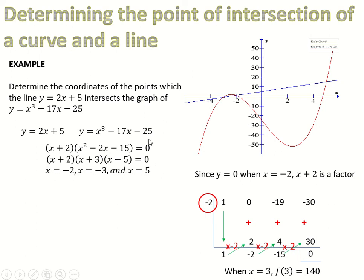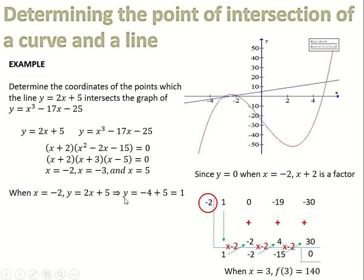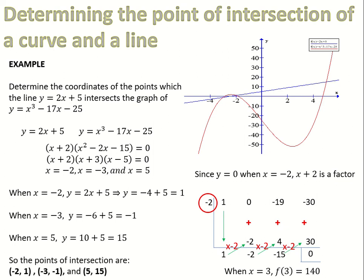These are just the x-values of where the lines meet, so we need to find the y-values. Since the points lie on both equations, use the simpler one: y equals 2x plus 5. When x equals minus 2, y equals minus 4 plus 5 equals 1. When x equals minus 3, y equals minus 1. When x equals 5, y equals 15. This gives us the three intersection points: (minus 2, 1), (minus 3, minus 1), and (5, 15). You can use the graph to double-check these look correct.